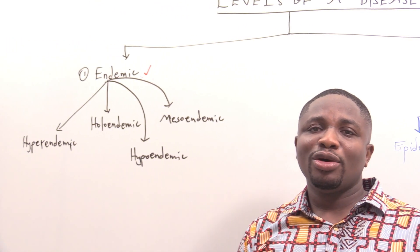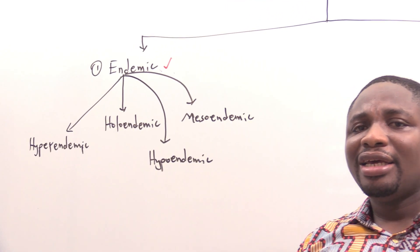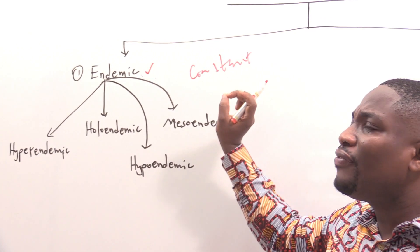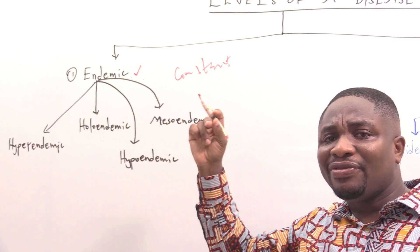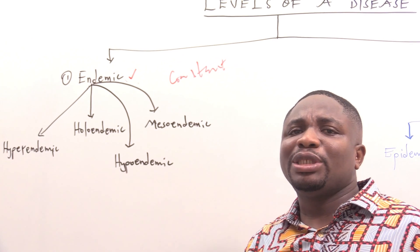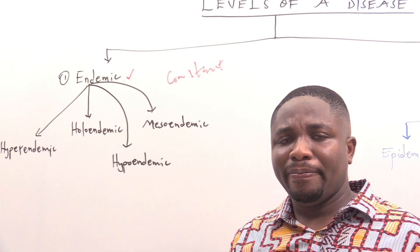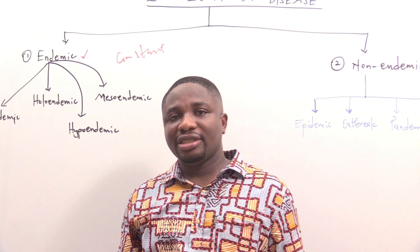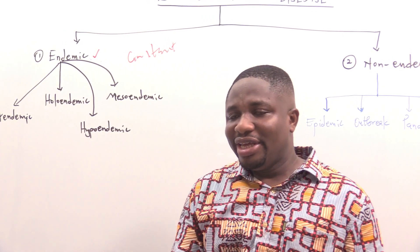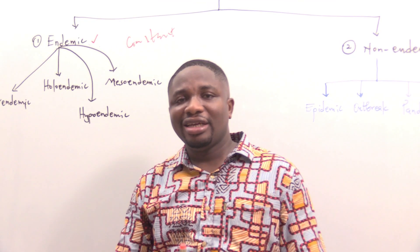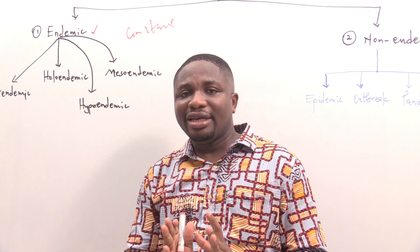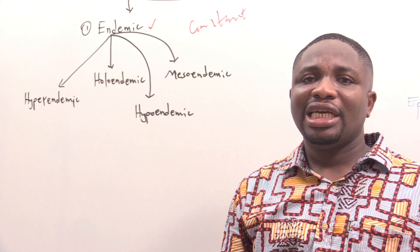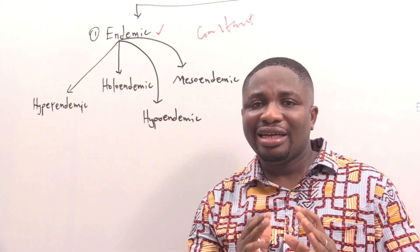When we say a condition or a disease is endemic, it refers to the constant presence of a disease in a defined geographical area, or in a defined population, or specified population within normal expectancy. For example, if in a particular community they expect about 500 cases of malaria in a year, and every year they get cases within 500, that makes the malaria endemic. It means a force within the usual frequency.